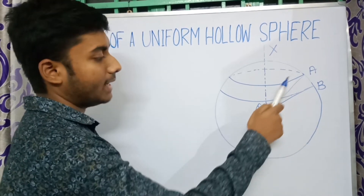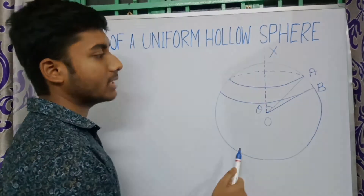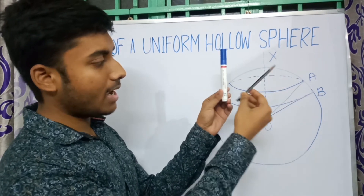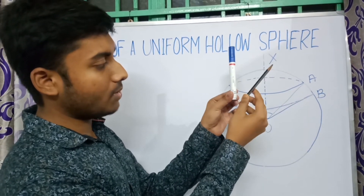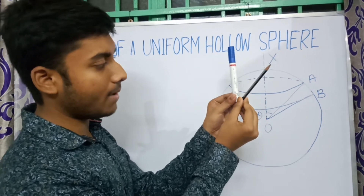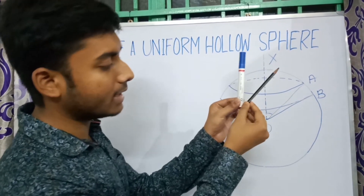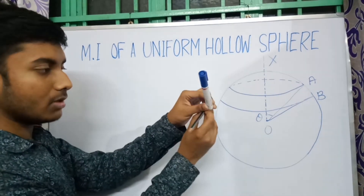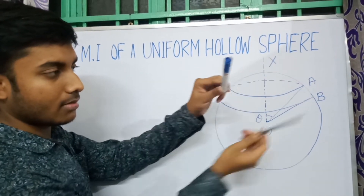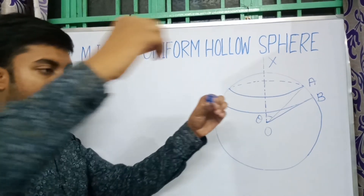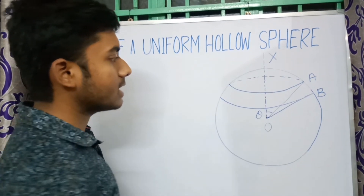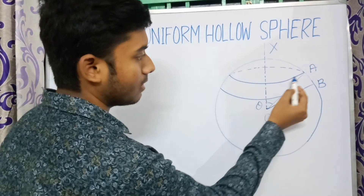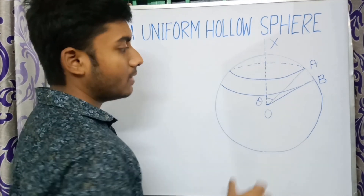If OA is a radius of this sphere at an angle theta with the axis OX, and if we move this radius OA about this axis OX with a fixed angle theta, then if we look at it from the side, this will be a circle — shown here by the dotted line.